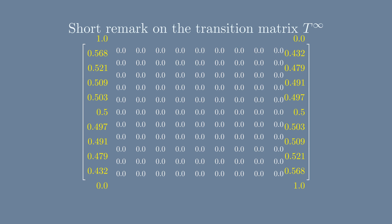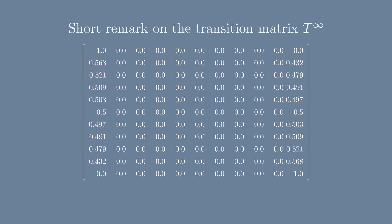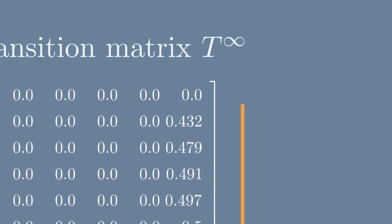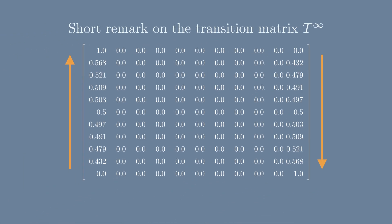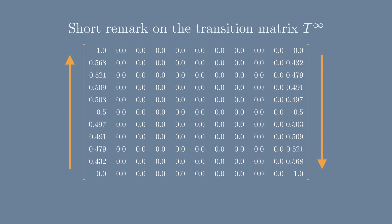The second observation is the monotonically changing values. It makes sense because the closer you are to death or freedom, the more likely you will meet death or freedom.